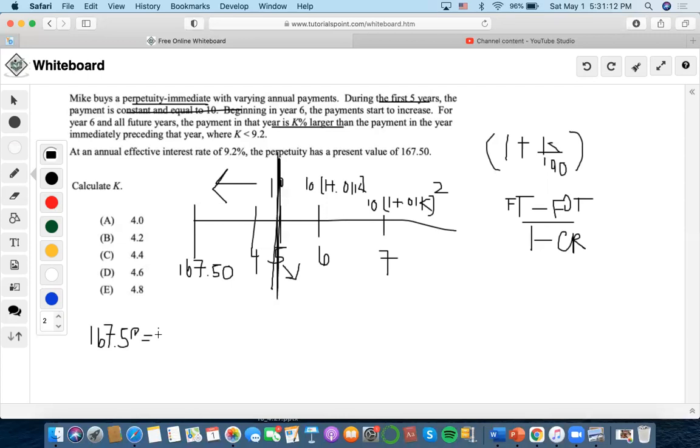We set up the equation: 167.50 equals 10*a-angle-4 at effective interest rate of 9.2 percent for the constant payments. Then we discount 10 at time five. We know these stream of payments aren't ending anytime soon, so the first omitted term portion of this equation is out. So we do plus 10*v^5 over one minus the common ratio.